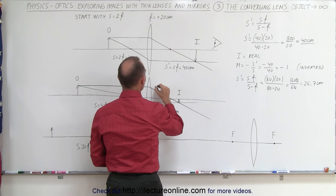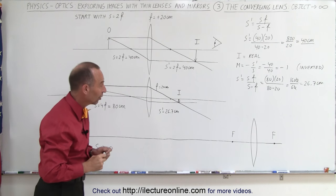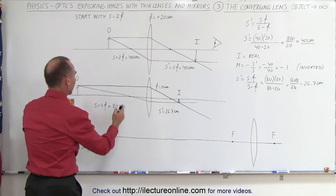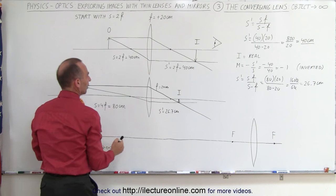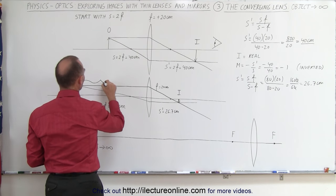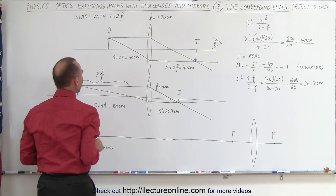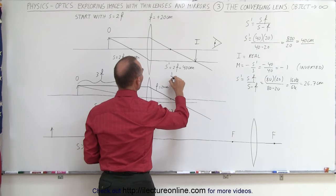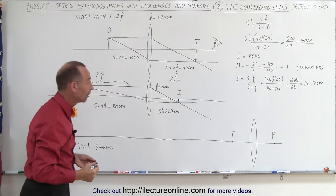Remember that F equals 20 centimeters, so the image is just 6.7 centimeters away from the focal point. This distance from the lens to the object is three times the focal length, and the distance from the focal point to the image is one-third of the focal length. Multiply 6.7 times 3 and you get 20 — the focal length.